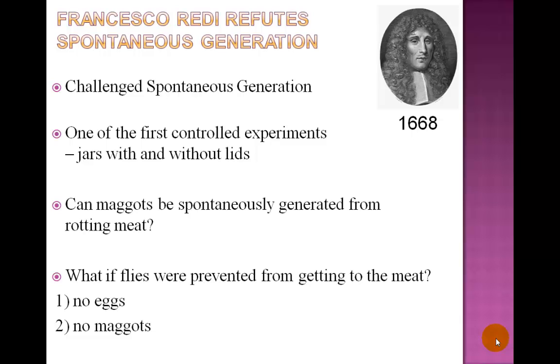the Italian naturalist Francesco Redi performed one of history's first controlled biological experiments in which he placed rotting meat into jars with or without lids to answer the question he had, can maggots be spontaneously generated from decomposing meat?